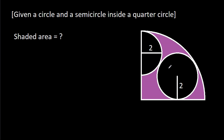In this video, we have been given a circle and a semicircle inside a quarter circle. The radius of the circle is 2 and the radius of the semicircle is 2. We have to find the shaded area.